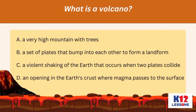What is a volcano? A. A very high mountain with trees. B. A set of plates that bump into each other to form a landform. C. A violent shaking of the earth that occurs when two plates collide. D. An opening in the earth's crust where magma passes to the surface.